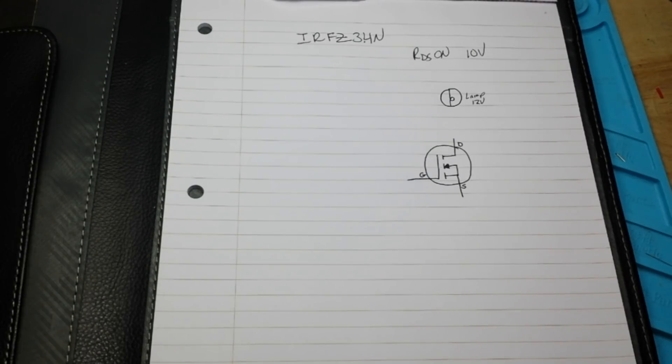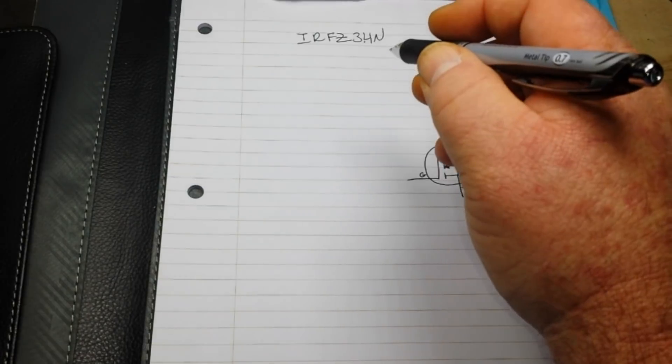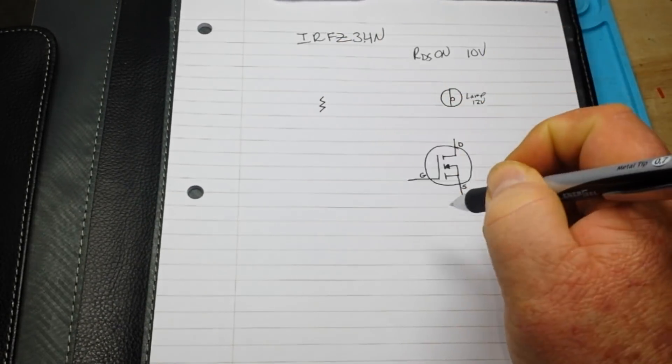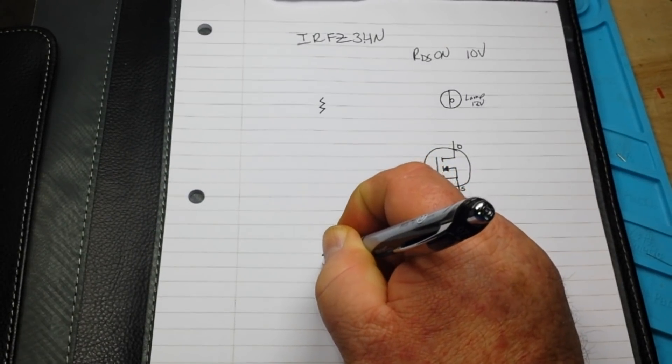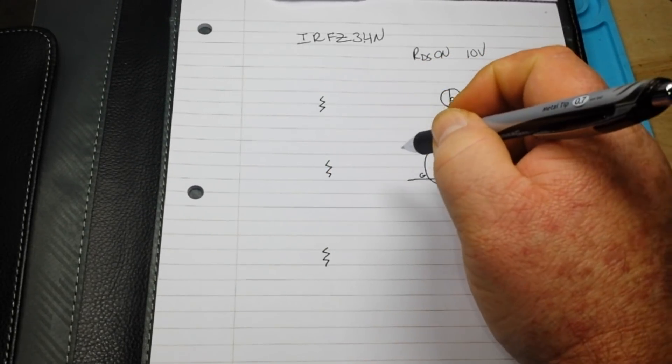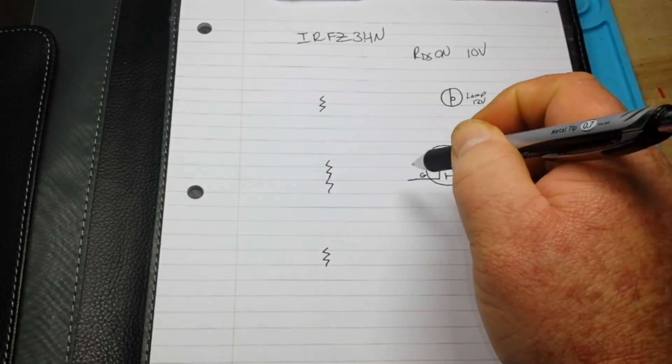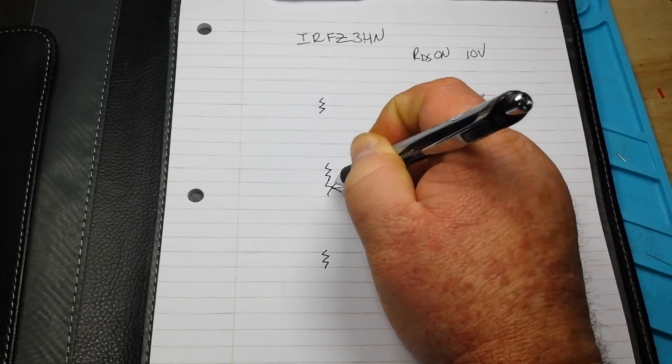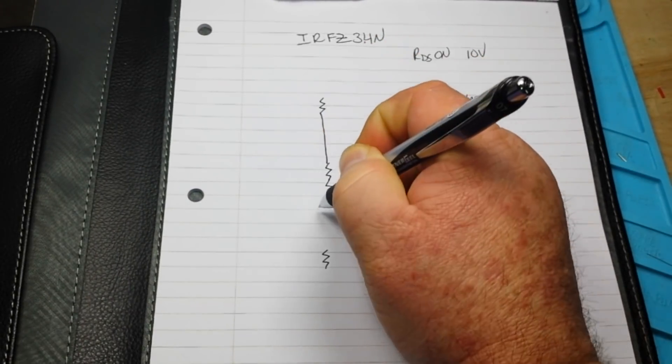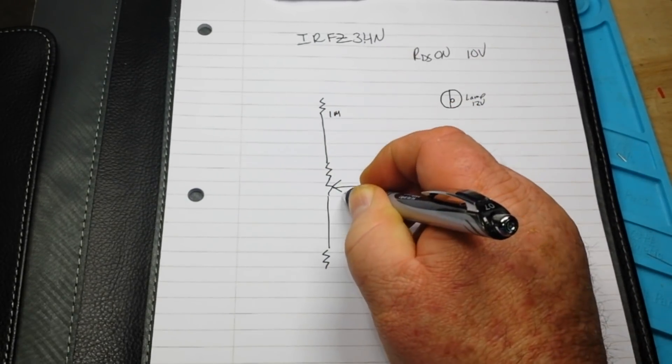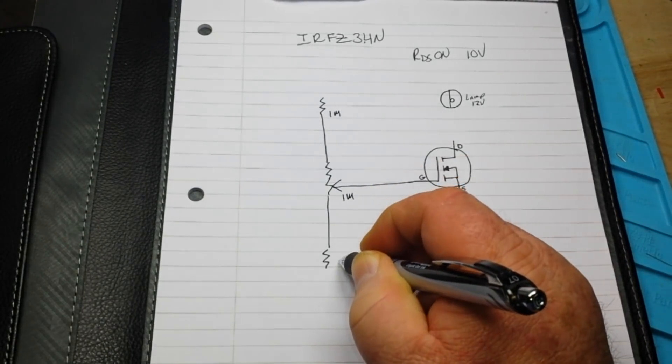Now what we're going to do is we're going to make basically a voltage divider here. So we're going to have three resistors just like this. This one is of course going to be a variable resistor and these are all going to be one meg resistors.